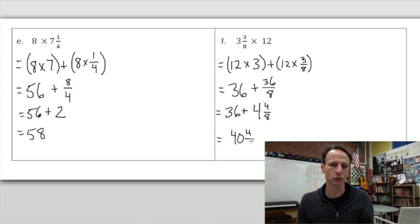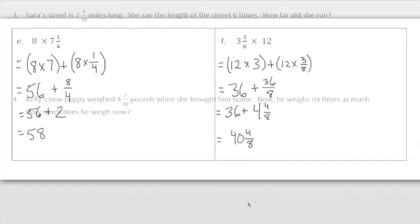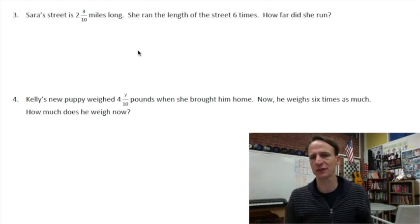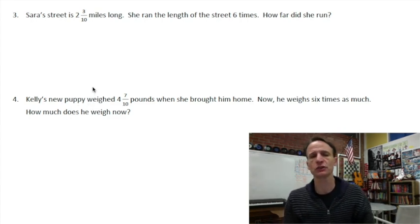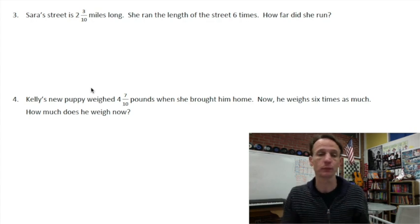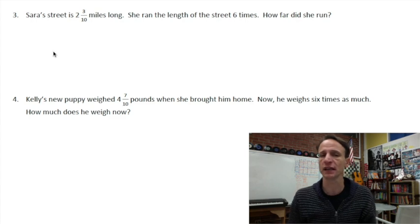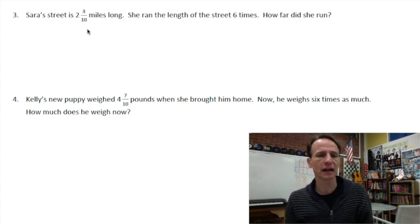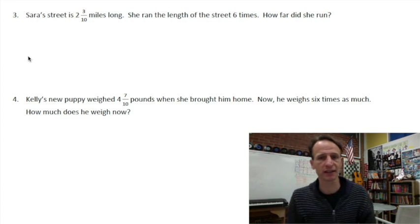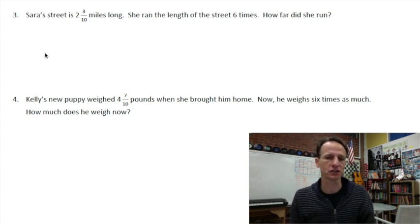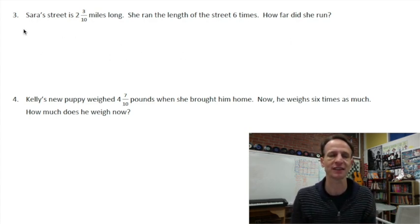And now we just have numbers three and four to finish up, and this homework time will be complete. All right, and as we often do, we'll round it out with two word problems practicing what we've learned. And notice it does not say to use the draw-write method, so we're not going to. We're just going to do the math, and we will write a statement of course. But I don't think there's much cause to draw here. If your teacher asked you to then go ahead and do it. So Sara's street is two and three-tenths miles long. She ran the length of the street six times. How far did she run?